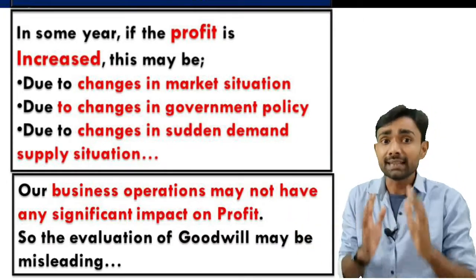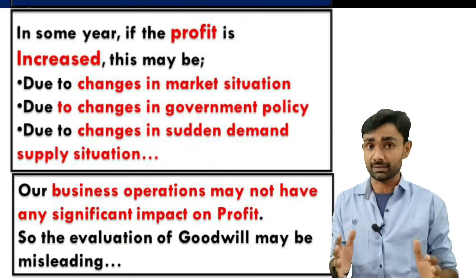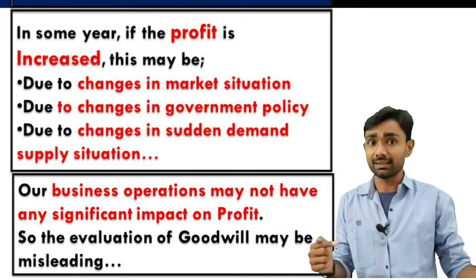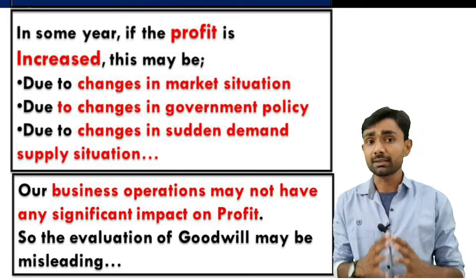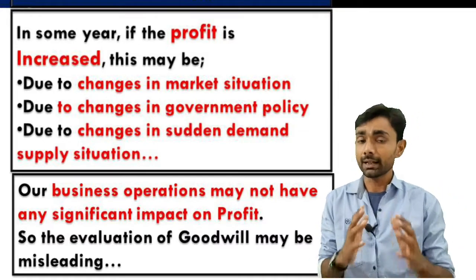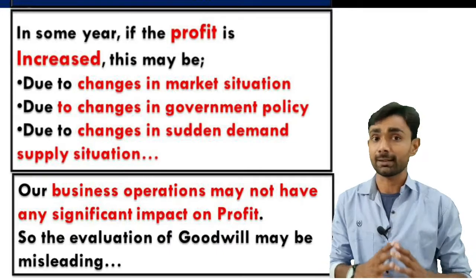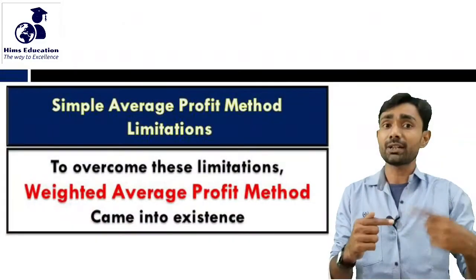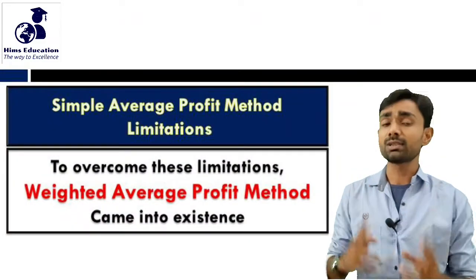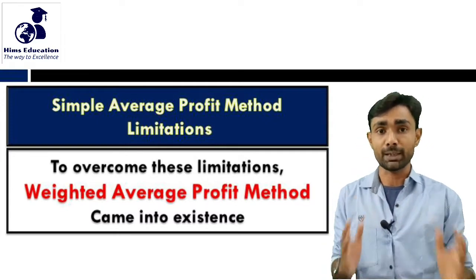There is a possibility of having certain factors where, if we are using the simple average profit method of goodwill, there is a possibility that we can get the goodwill answer wrong. So, in order to overcome this limitation, the other method that exists is the weighted average profit method.